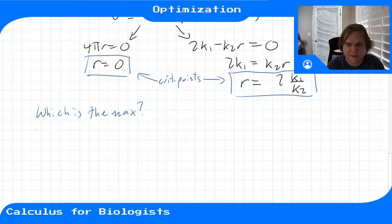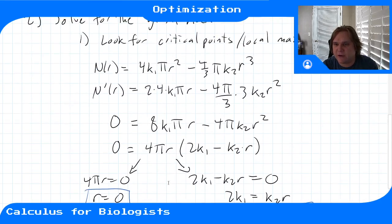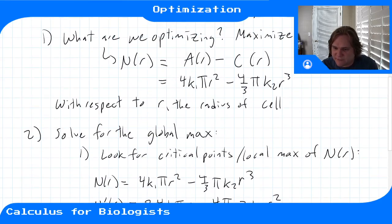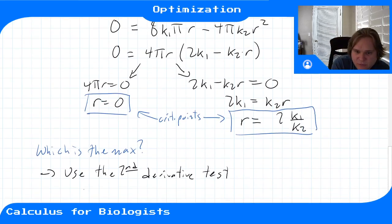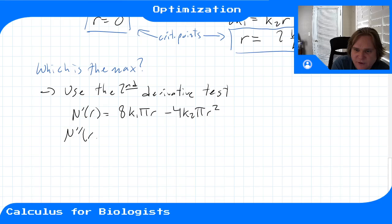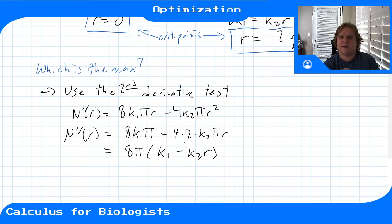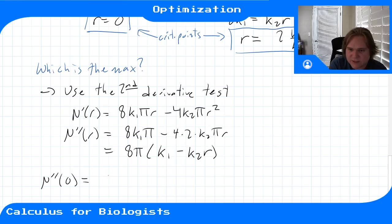Let's use the second derivative test, as that's the easiest approach here. We'll check the second derivative at r = 0 and at r = 2k1/k2. The first derivative is N'(r) = 8k1πr − 4πk2r², so taking another derivative gives N''(r) = 8k1π − 8πk2r, which we can factor as 8π(k1 − k2r).